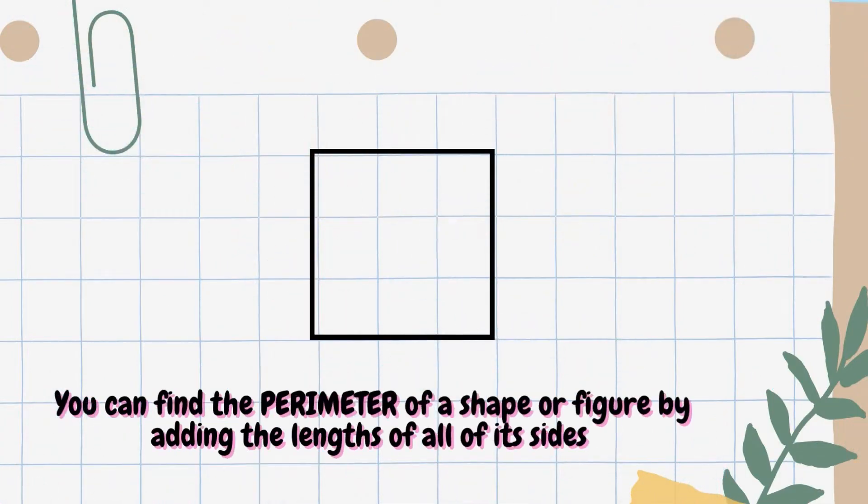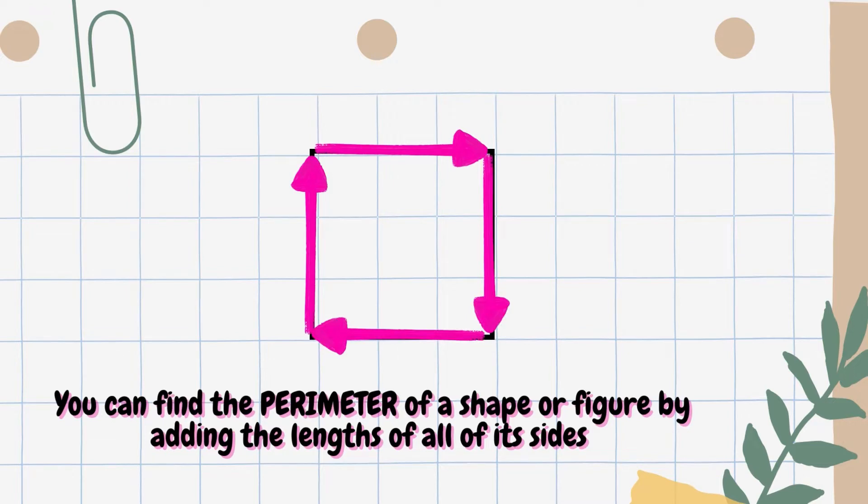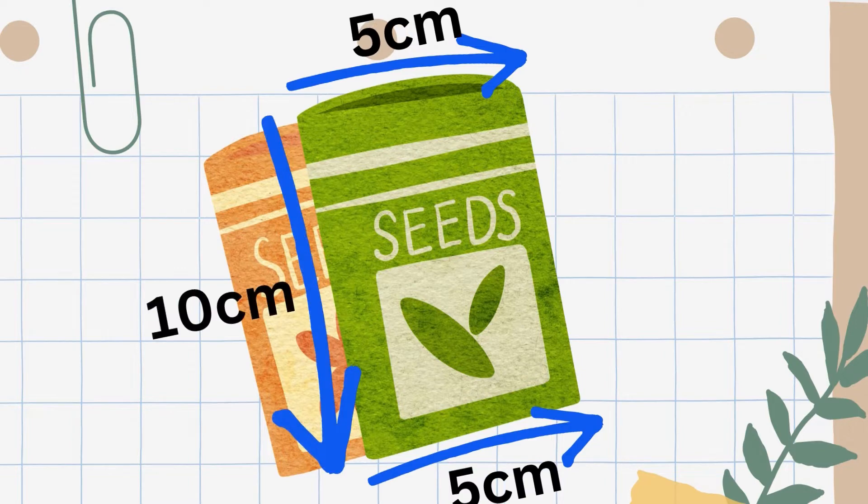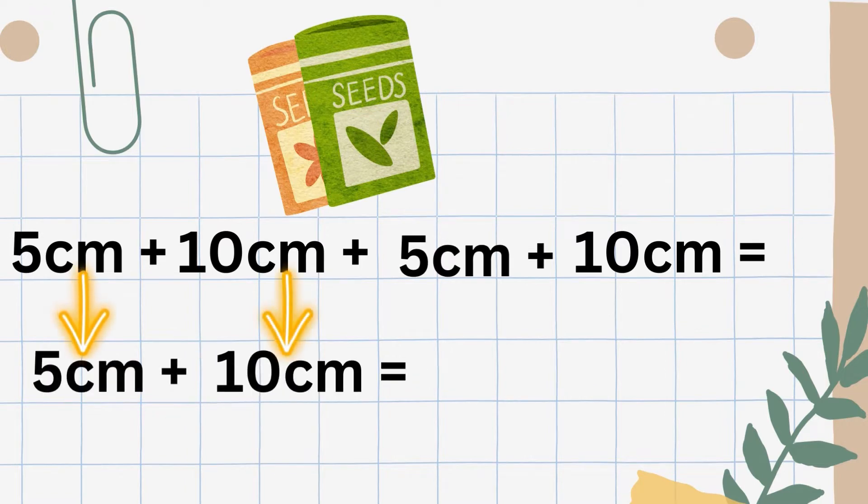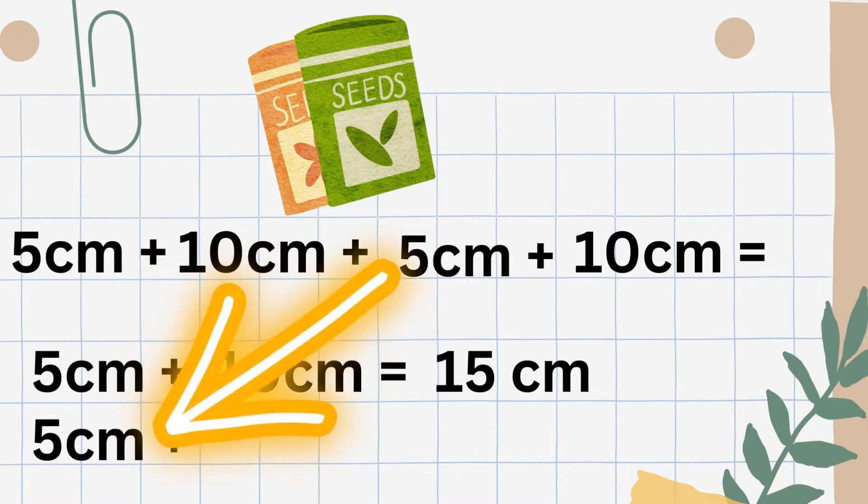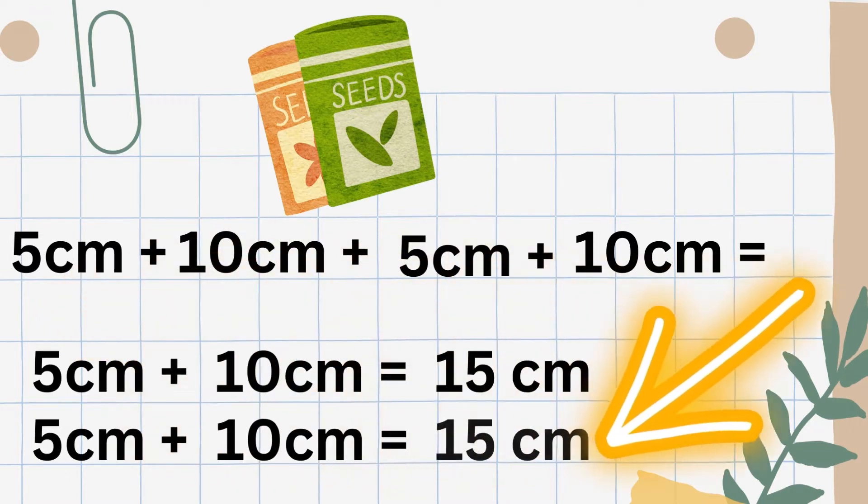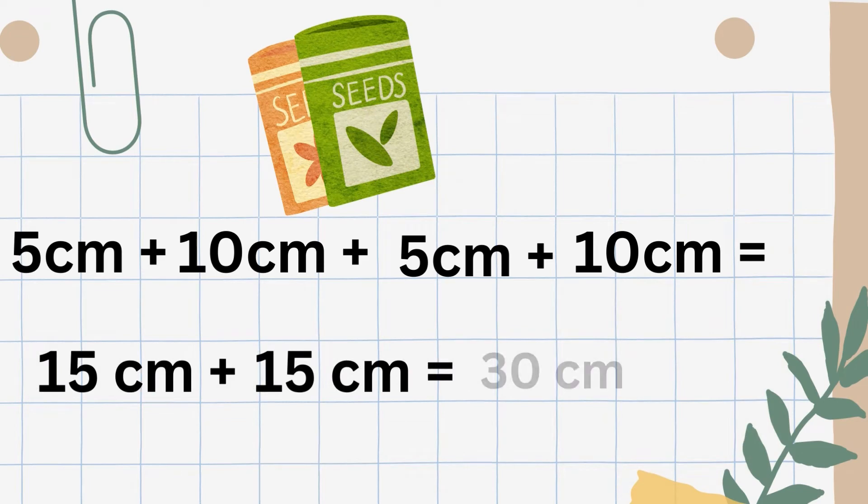You can find the perimeter of a shape or a figure by adding the length of all its sides together. The measurements of the size of these packets of seed are 5 and 10 centimeters. To find the perimeter, add the length together. 10cm + 5cm + 10cm + 5cm = 15cm + 15cm = 30cm. The perimeter is 30 centimeters.